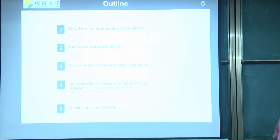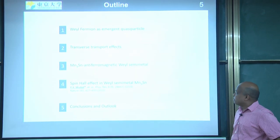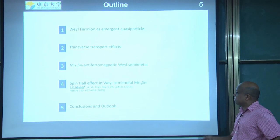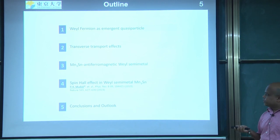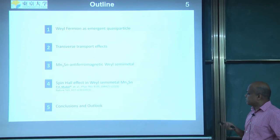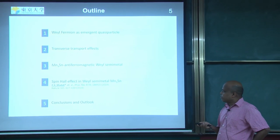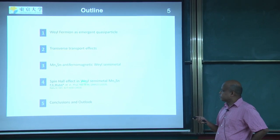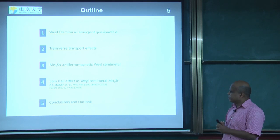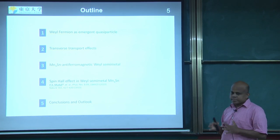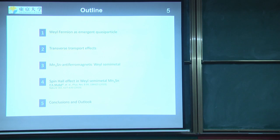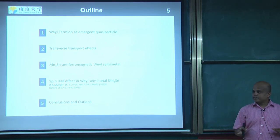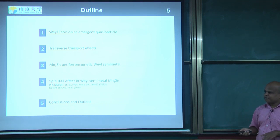I have five different topics. I'll start with what a Weyl fermion is and how it emerges as a quasi-particle in condensed matter systems. Then I'll give an introduction to different transverse transport effects, followed by an example system: Mn3Sn, an antiferromagnetic Weyl semimetal. I'll then show how we measure the spin Hall effect in Mn3Sn. This talk is particularly designed for students, so I'll simplify — oversimplify — quite a lot of things. Experts in the audience, please note that things are simplified.